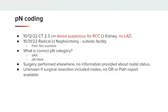An additional example. On 10/12, a CT showed a 2.3 centimeter lesion suspicious for renal cell carcinoma of the left kidney, no lymphadenopathy. The patient had a radical left nephrectomy performed at an outside facility, and you do not have the pathology report available. In this scenario, you would record PN blank due to the surgery being performed elsewhere and no information being provided about nodal status. It is unknown if the surgical resection included nodes, and no OR or path report is available.